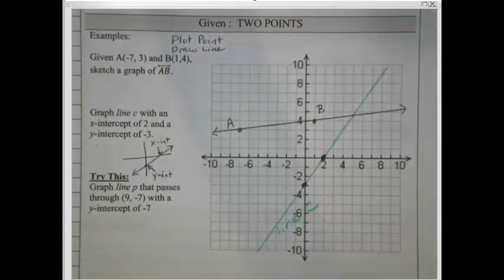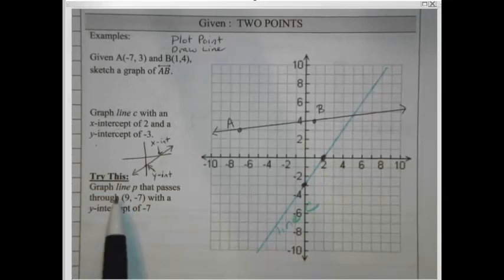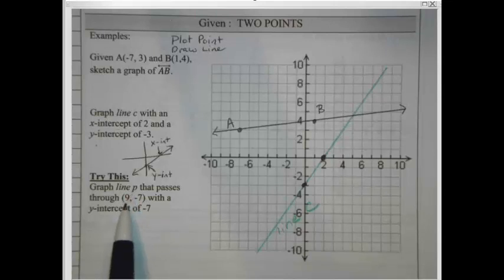Alright, now our last one is a Try This For You. So your job is to pause the video right now and do the graph of Line P on your own. Make sure that it passes through the point at 9, negative 7 and has a y-intercept of negative 7. Pause it, come back, and check. I'll have it for you when you get back.